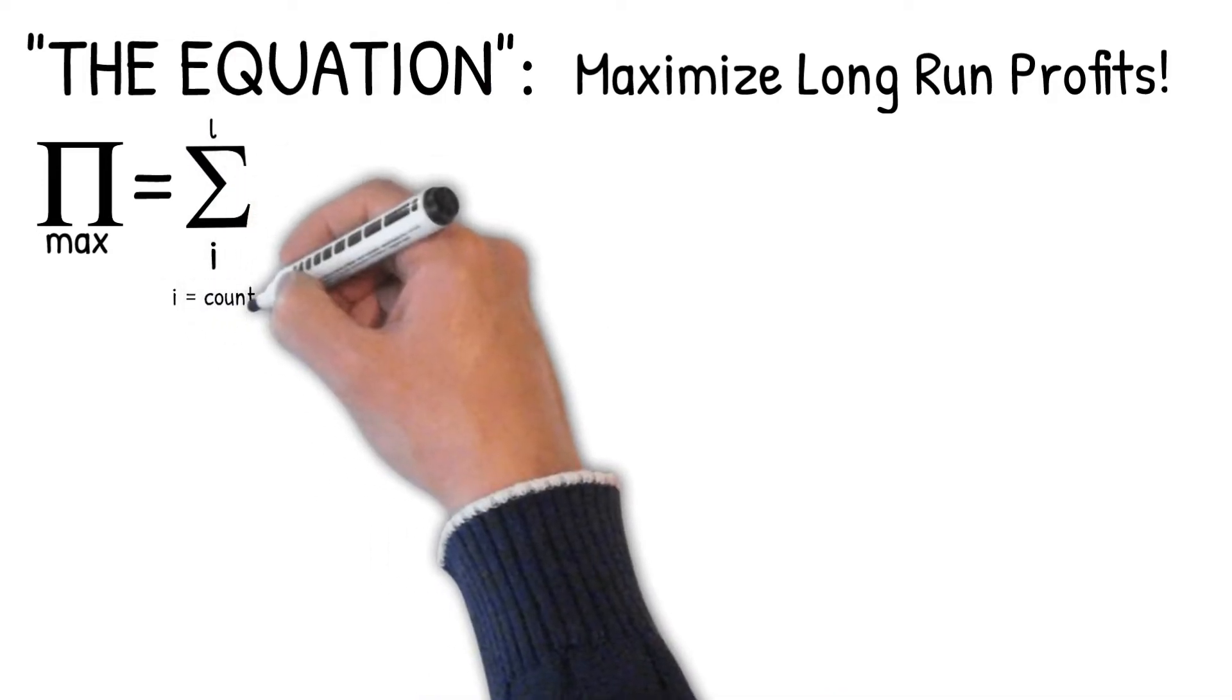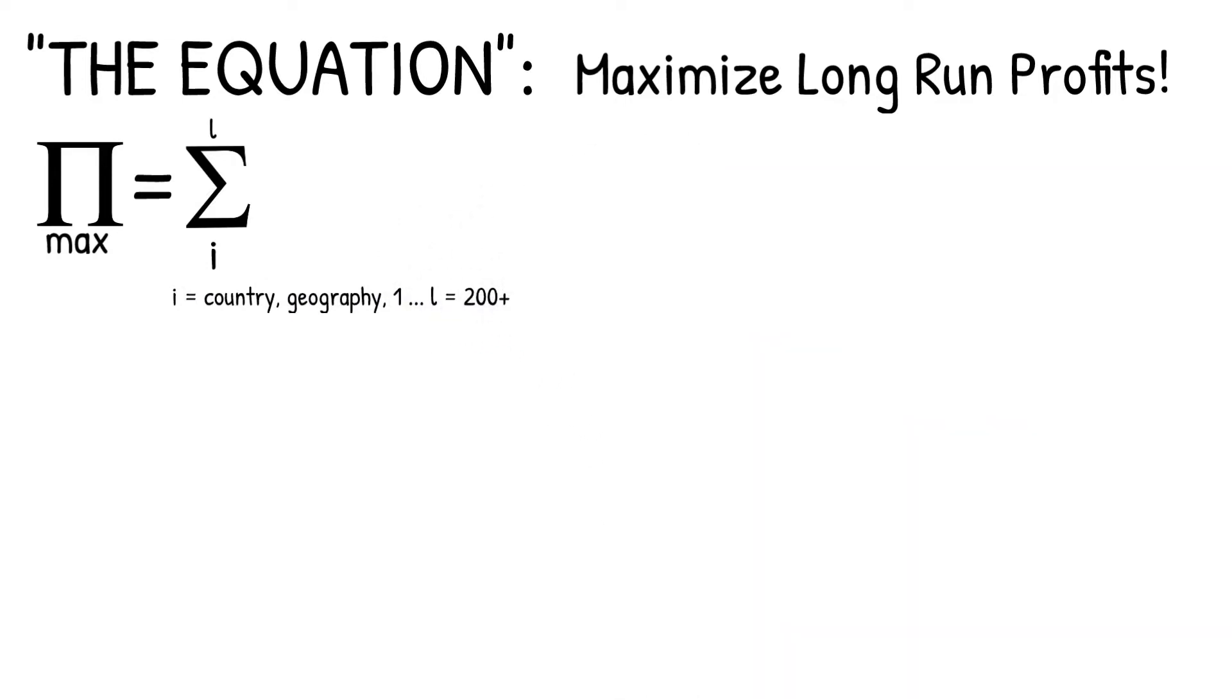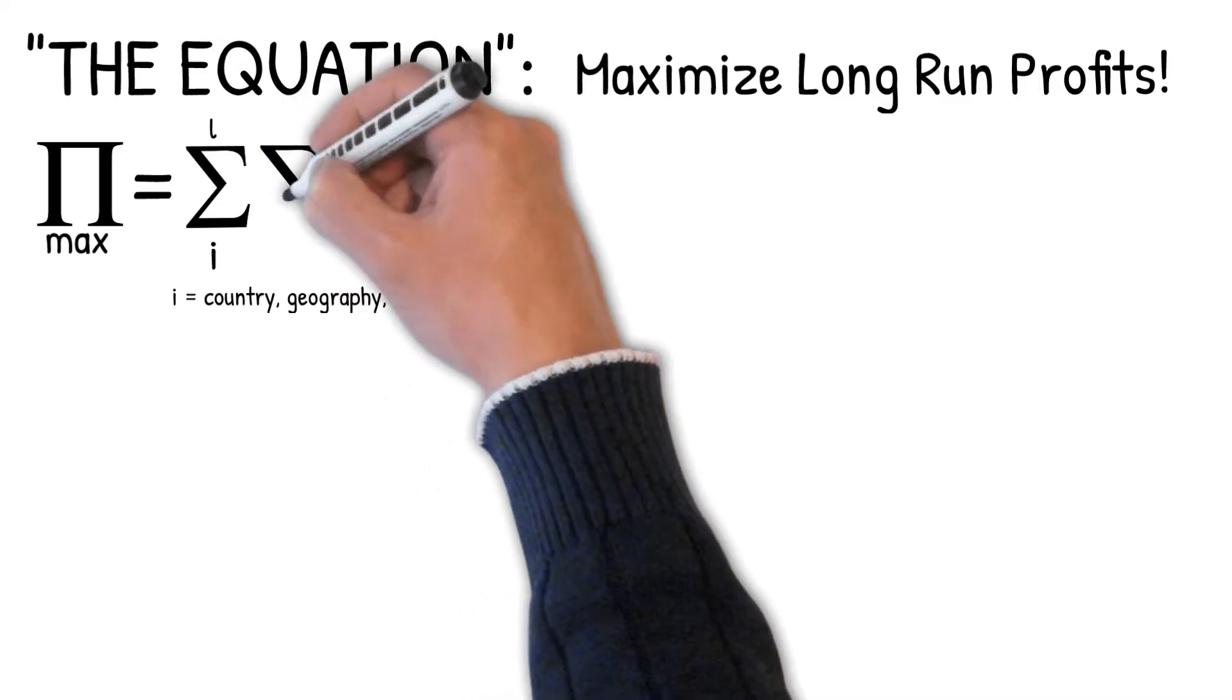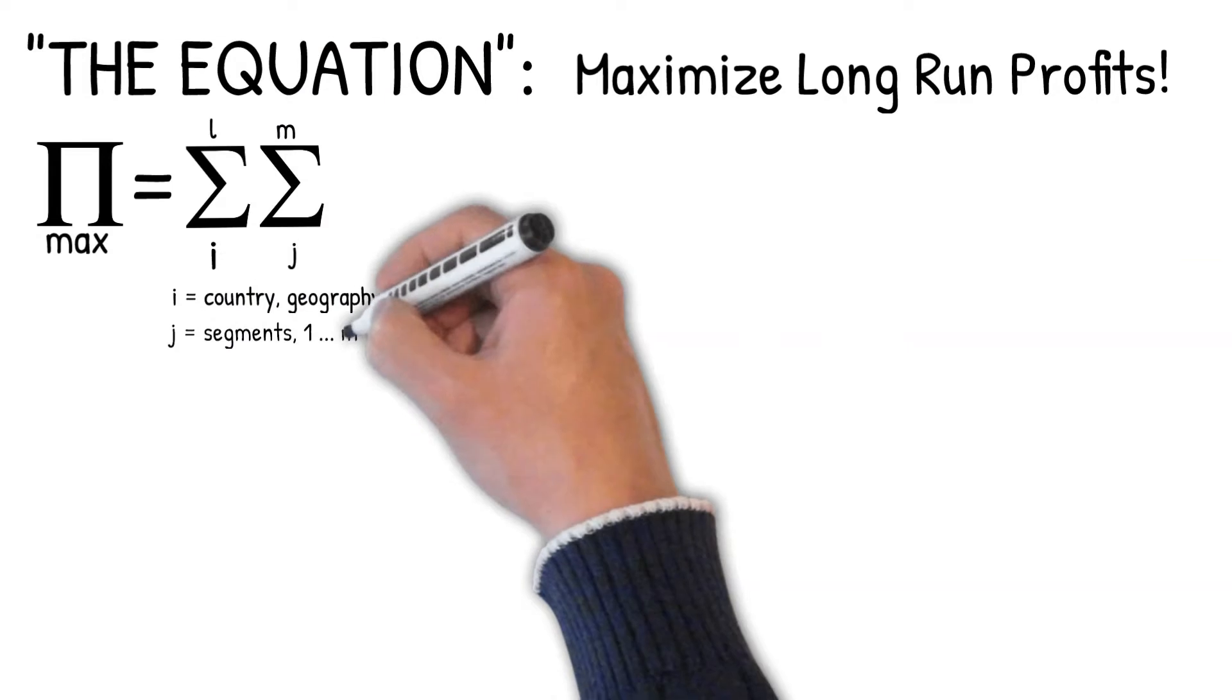The first sigma is we have to decide in which countries do we want this application to be used in. Just because we're targeting China, for example, doesn't mean that our products or services are going to be sold to all people in China. We then have to decide which segments we are going to target.